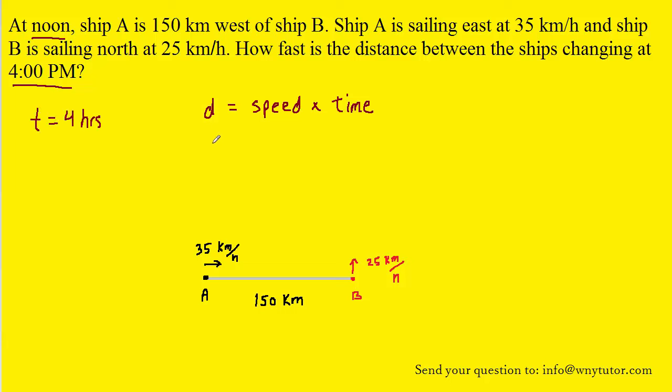Since we know the speed of ship A, we can figure out the distance that it travels in those 4 hours, which would be 35 times 4, or 140 kilometers. So in a moment, we're going to reposition ship A so that it has traveled to the east 140 kilometers. That's going to put it approximately right here.